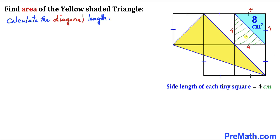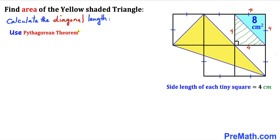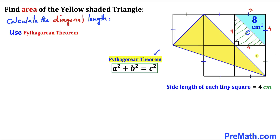Now let's focus on this shaded triangle. We know this angle is 90 degrees, and we are going to calculate this diagonal length using the Pythagorean theorem: a squared plus b squared equals c squared. Calling the longest side c, and the two legs a and b, we fill in: 4 squared plus 4 squared equals c squared.